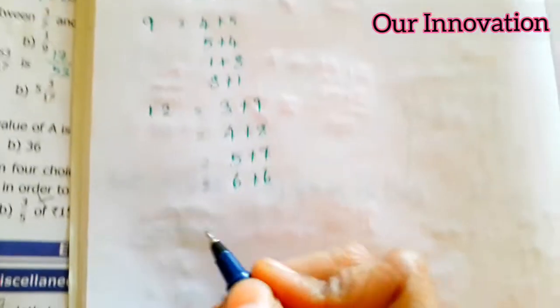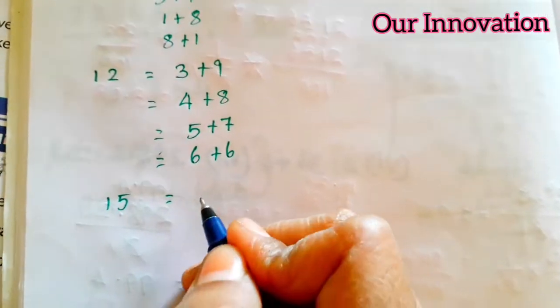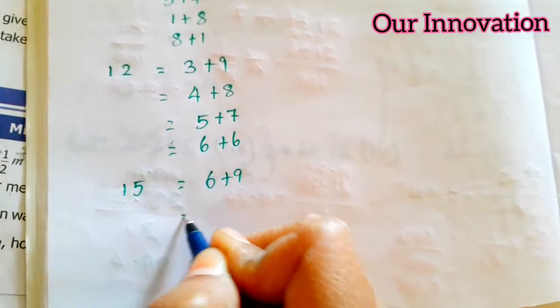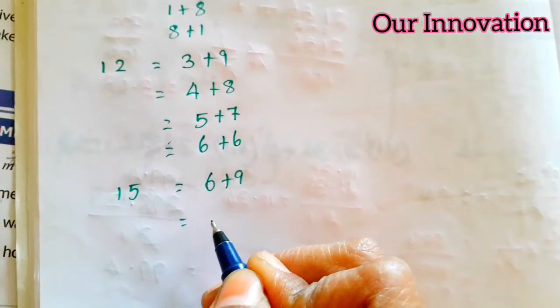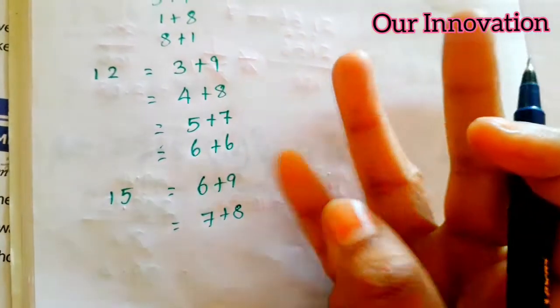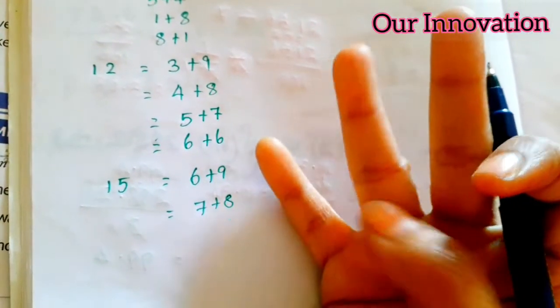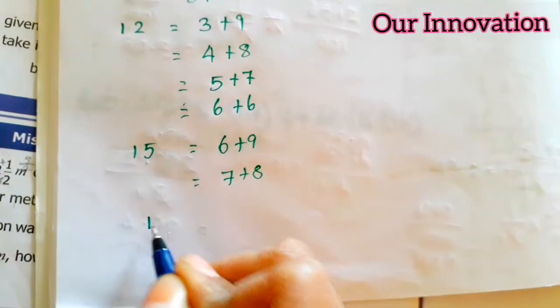Next, where are we going to number? 15. Now 15 is: 6 plus 9, 7 plus 8. That is 15. Okay. Next, 18. So 18 is again...